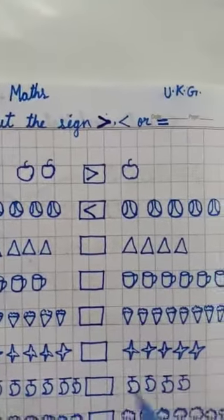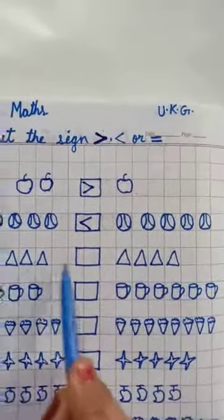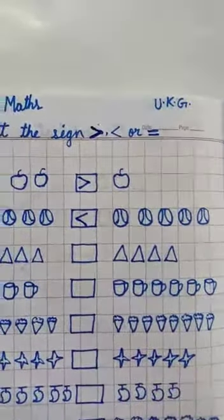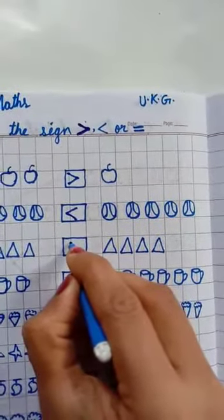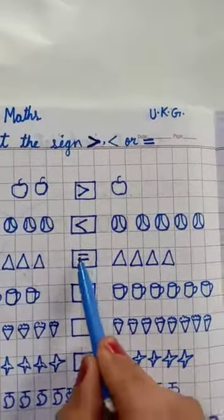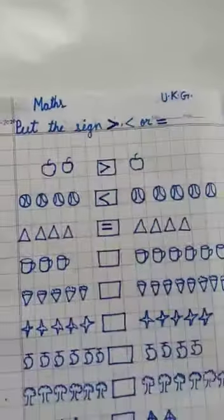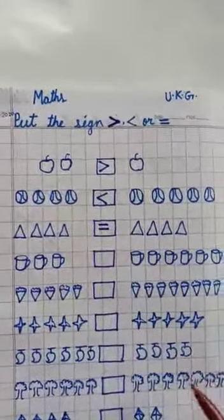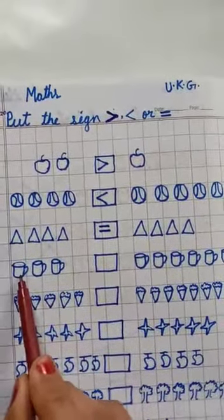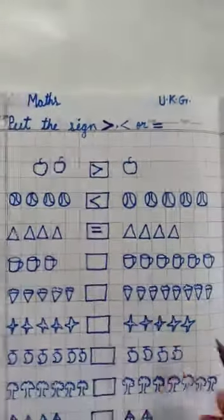Now the next picture: one, two, three, four triangles, and the other side one, two, three, four triangles. Both sides are equal, both sides are the same. So we will put here the equal to sign. This sign means both sides are equal. Okay, now next picture: here we have three cups — one, two, three cups.